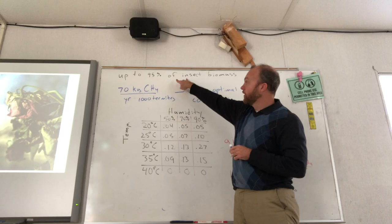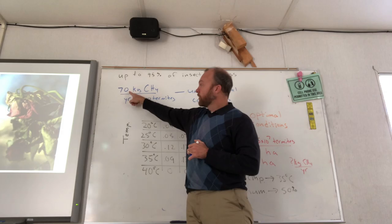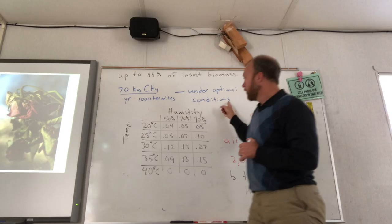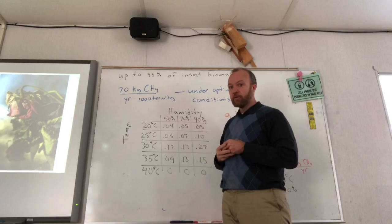So the question at first had a lot of text, and it was describing termites in a tropical rainforest. And it gave you some information that said that termites can be up to 95% of the insect biomass in the rainforest. It told you that under optimal conditions, the termites could produce 70 kilograms of methane per year per 1,000 termites under optimal conditions. And then it gave you a table that showed you the rate at which the termites consumed wood.